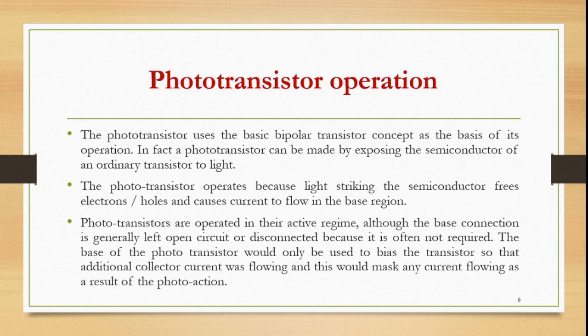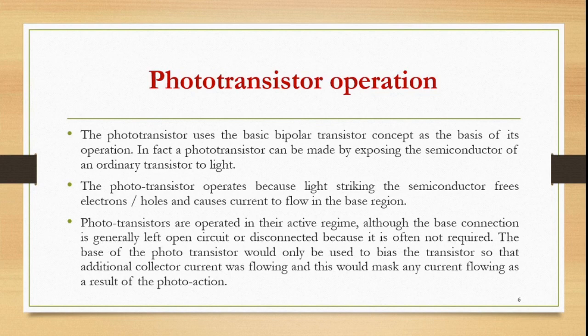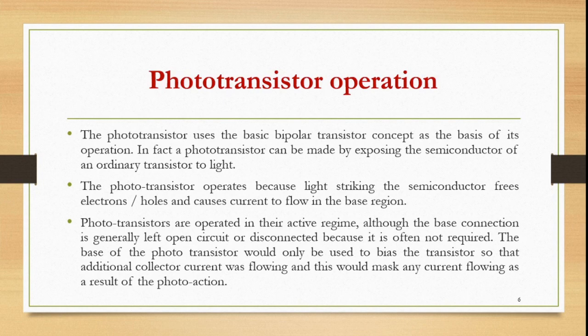In terms of operation, the phototransistor uses the basic bipolar transistor concept. A phototransistor can essentially be made by exposing the semiconductor of an ordinary transistor to light. Light striking the semiconductor frees electrons and holes, causing current to flow in the base region. Phototransistors are operated in their active regime, although the base connection is generally left open — disconnected — because using the base connection to bias the transistor would cause additional collector current to flow and would mask the current resulting from the photo action.